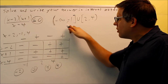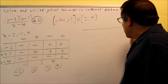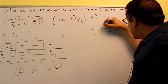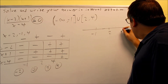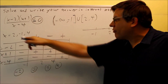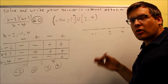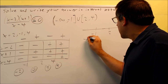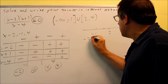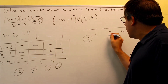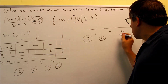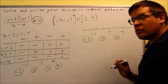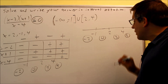So that's your answer. If you were to do it by the number line method, the only difference is you would first put down negative 1, 2, and 4 on a number line in order from smallest to largest — that's important. Then you pick the same test numbers: negative 2, zero, 3, and 5.